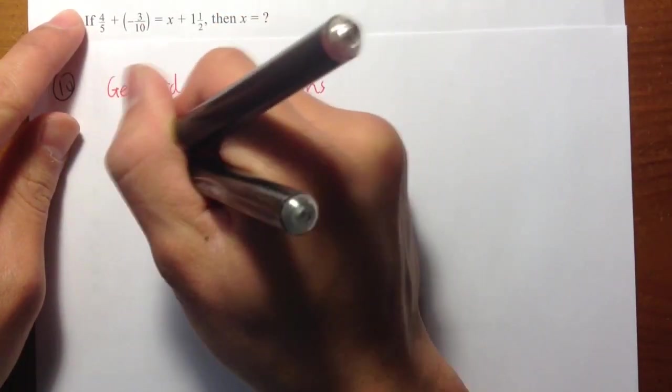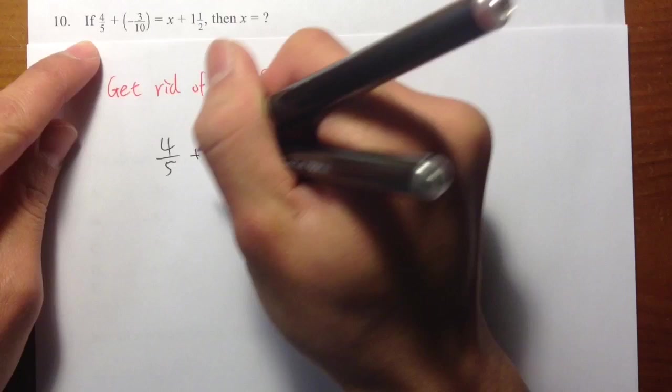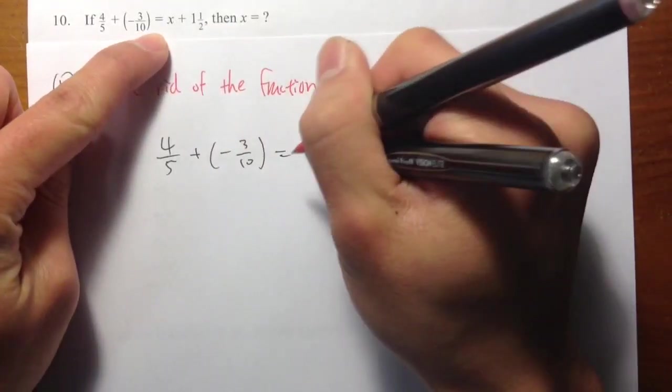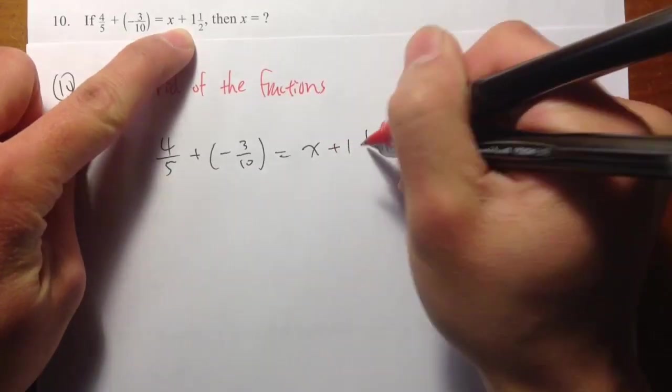So let me write down some necessary steps first. First, I need to copy down the question: 4 over 5, plus parentheses, negative 3 over 10, parentheses, equals to x, plus 1 and 1 half.